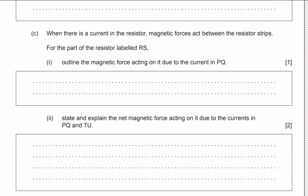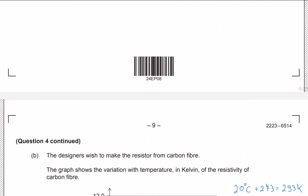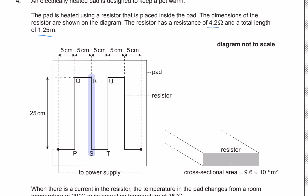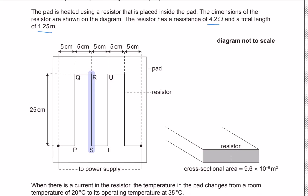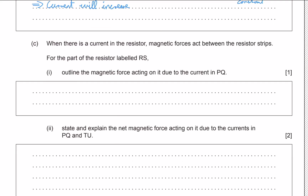When there is a current in the resistor, magnetic forces act between the resistor strips. We need to outline the magnetic force on RS due to the current in PQ. Assuming the current flows in a particular direction around the loop, we can see that in RS and PQ the currents travel in opposite directions.